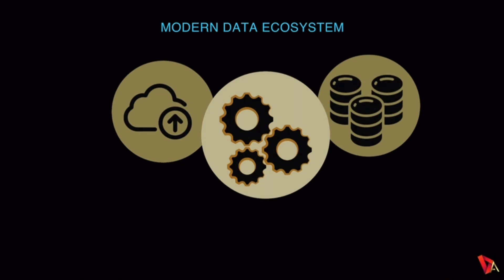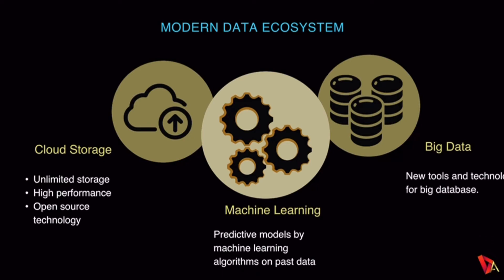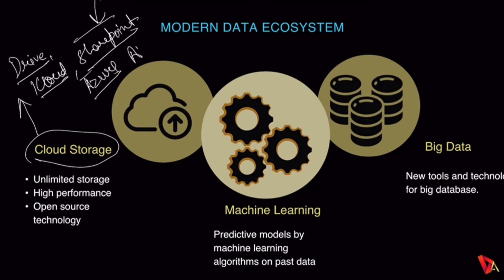Presently we are dealing with three major data ecosystems: big data, cloud storage, and machine learning. For cloud storage, examples include Google Drive, iCloud — which is common in iPhone/iOS devices — Microsoft SharePoint, Azure, and for Amazon we have AWS.